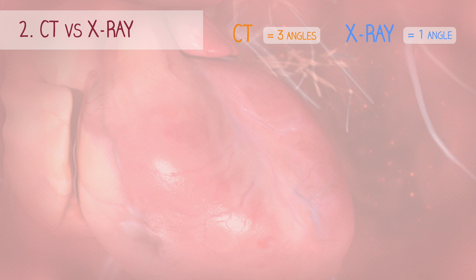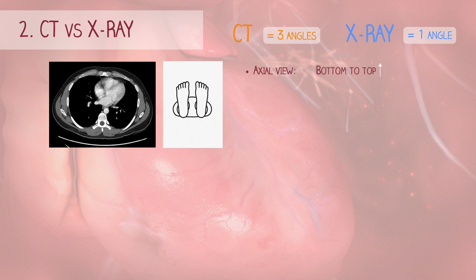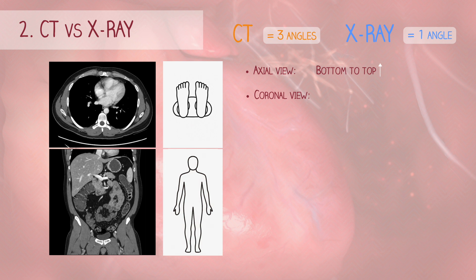The first view is the axial view. Imagine you're standing at the feet of a patient lying down and looking upward — axial slices give you a view from bottom to top. The second view is the coronal view. Pretend you're slicing a body from ear to ear; these slices give you a view from front to back.